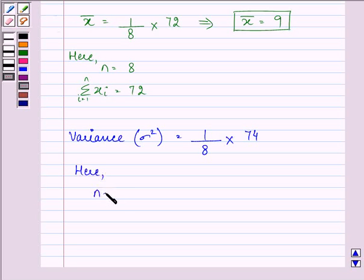Here, n is equal to 8, and summation xi minus mean the whole square, where i is equal to 1 till 8, is equal to 74. So, on calculating, here we have the answer as 9.25 as the variance.